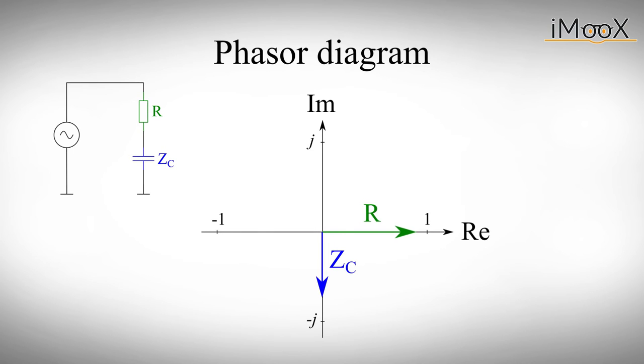The phasor diagram lets you compare amplitude and phase of the input and output of a circuit. The diagram uses horizontal axis, called the real axis, which represents the impedance of a resistor with no phase shift. The vertical axis is called the imaginary axis and represents impedances with a 90 degree phase shift, like our capacitor.